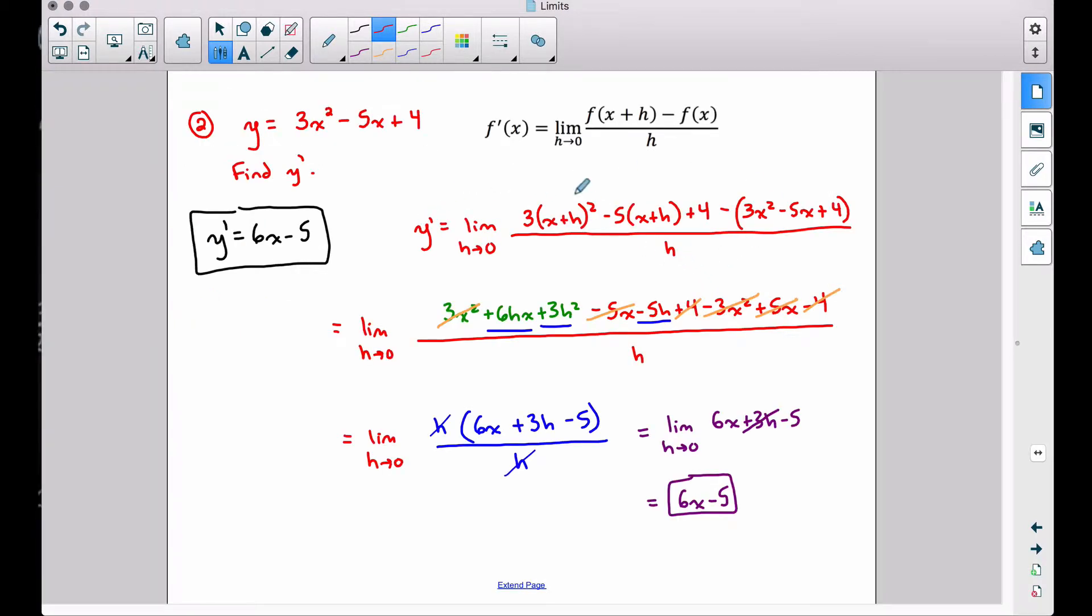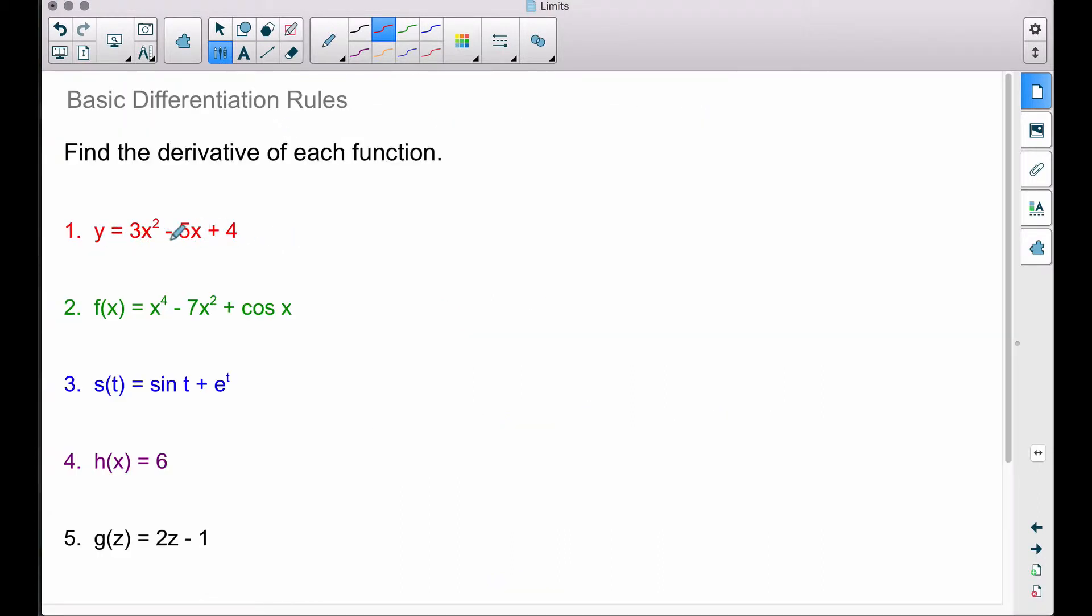Here it was from an earlier video where we did the formal definition of a derivative and we got our derivative to be 6x minus 5 for this function that we had given. So here's that same problem again, y equals 3x squared minus 5x plus 4. Here's how you find the derivative very fast.